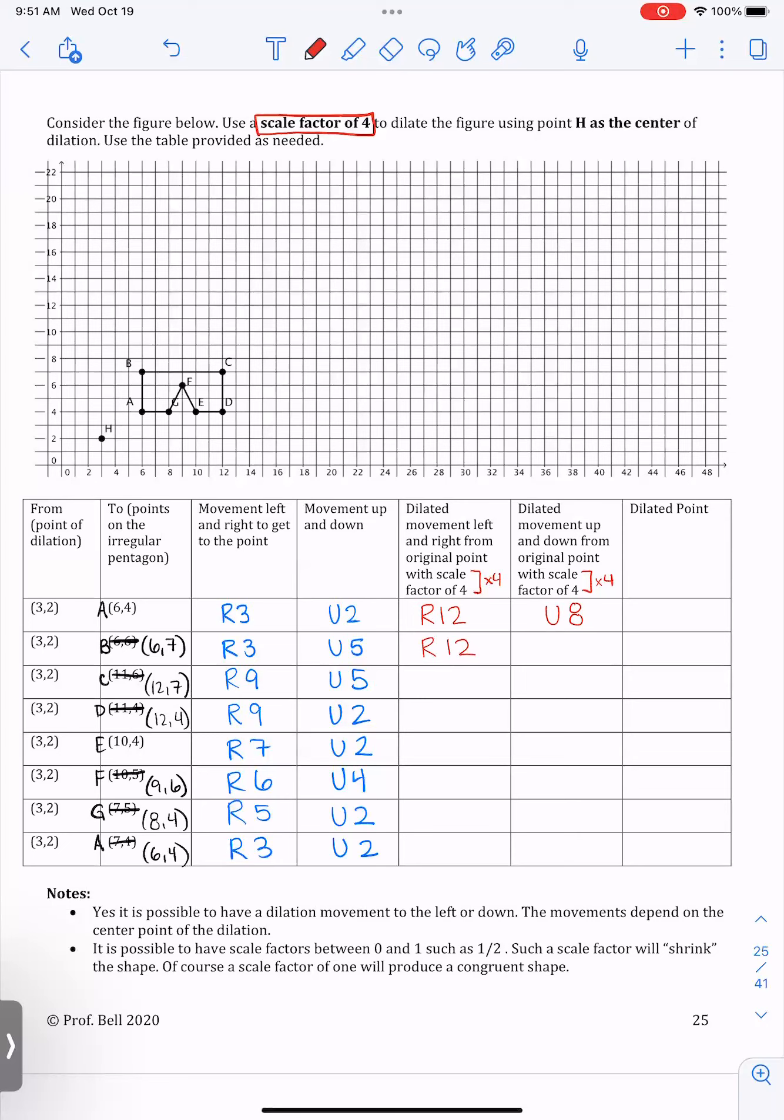So we're going to repeat the process, right 12, and then this is five times four, so up 20. And again, times four. So right 36 and then up by 20 again, right 36 up by eight.